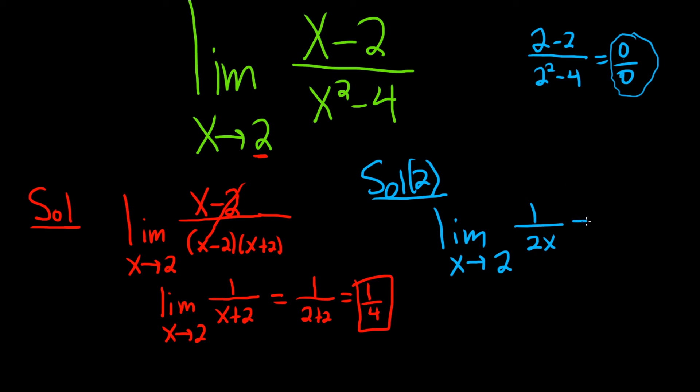And now you can plug in the 2. So you drop the limit sign. So you get 1 over 2 times 2. So you get 1 over 4.